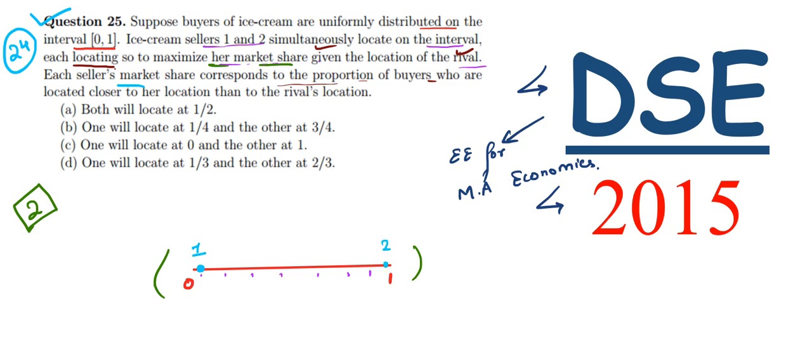The ice cream buyers toward the right side of 2 will obviously go to 2. But we can draw a line in the middle - buyers on the right side of this middle will go to 2, and buyers on the left side will go to 1.